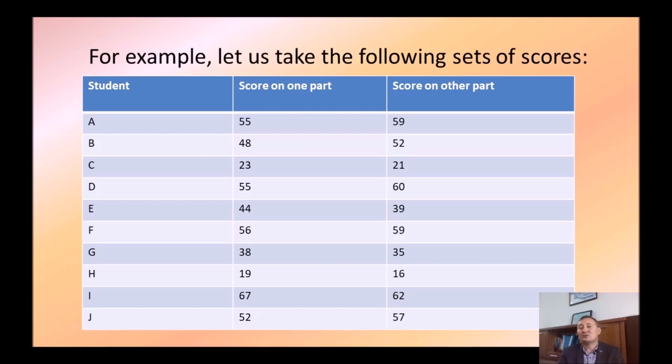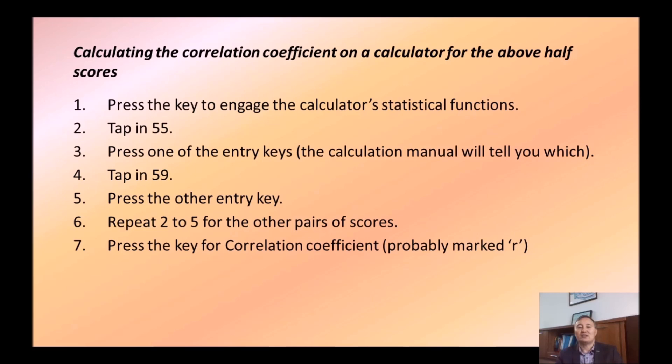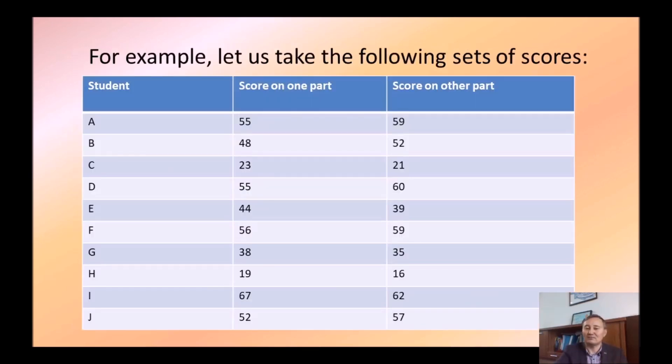Now, let's continue with calculation of reliability coefficients. So, let's imagine that we use split-half technique. We have 10 students. We divide the test into two parts. For example, odd numbers and even numbers. And here we have the results. Scores on the first part and scores on the second part. What should we do? We can get a scientific calculator. And we should engage statistical functions first and enter all those numbers. 55, 59 and so on. Here we have numbers like student A. 55, first score, first part. 59, the second part.